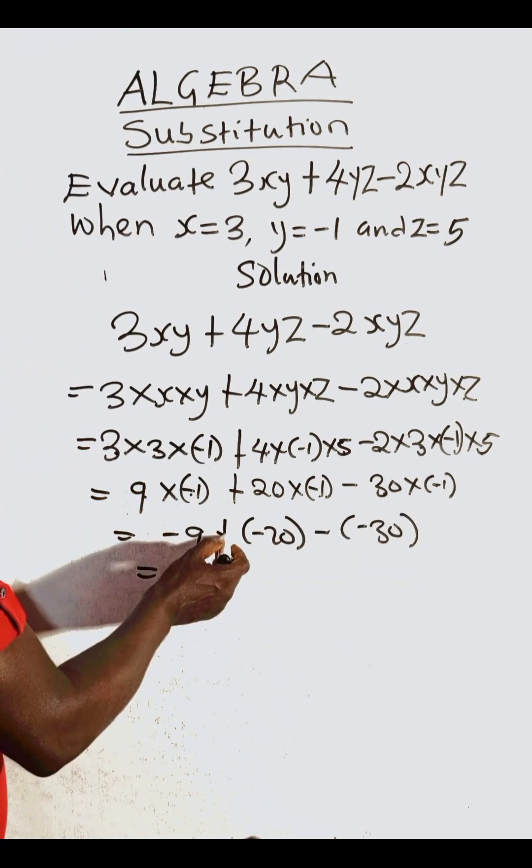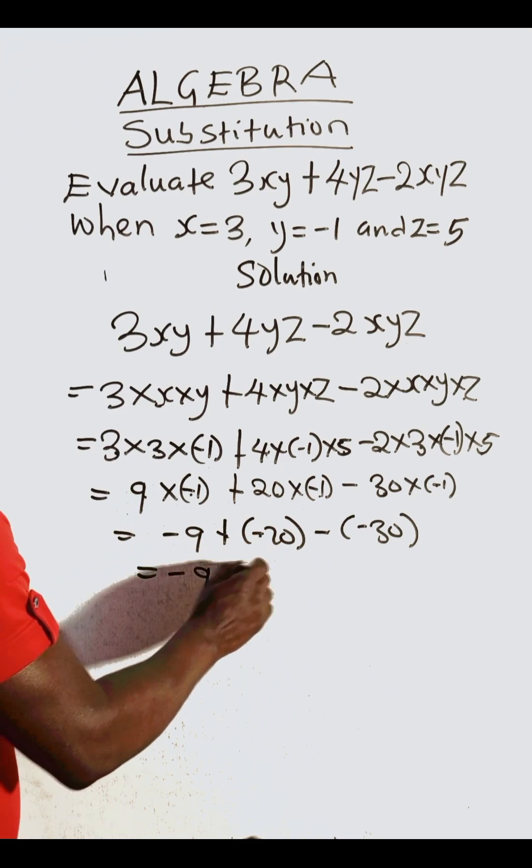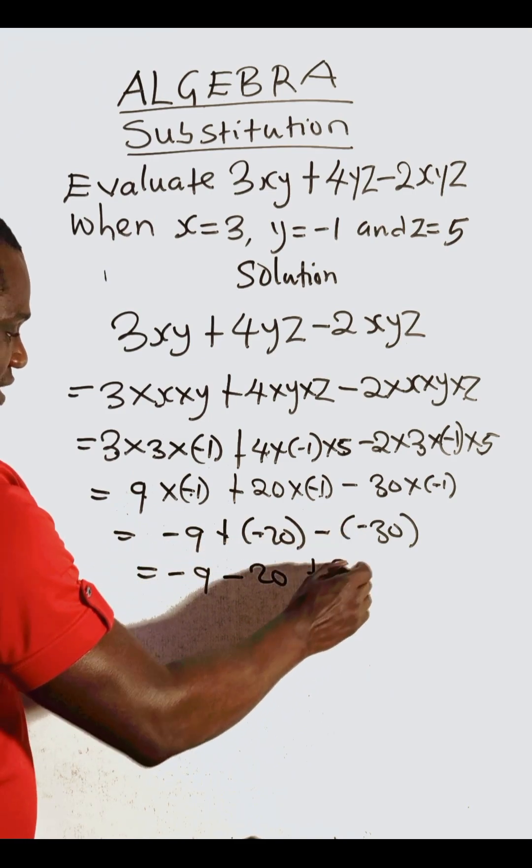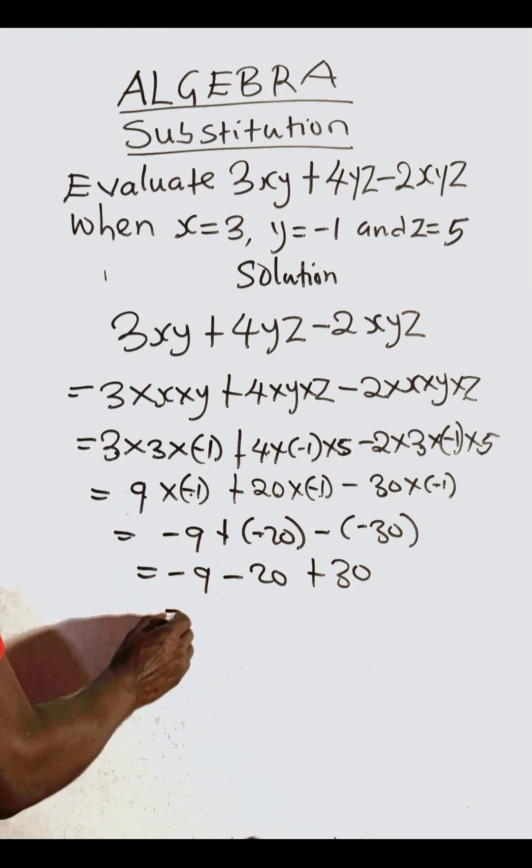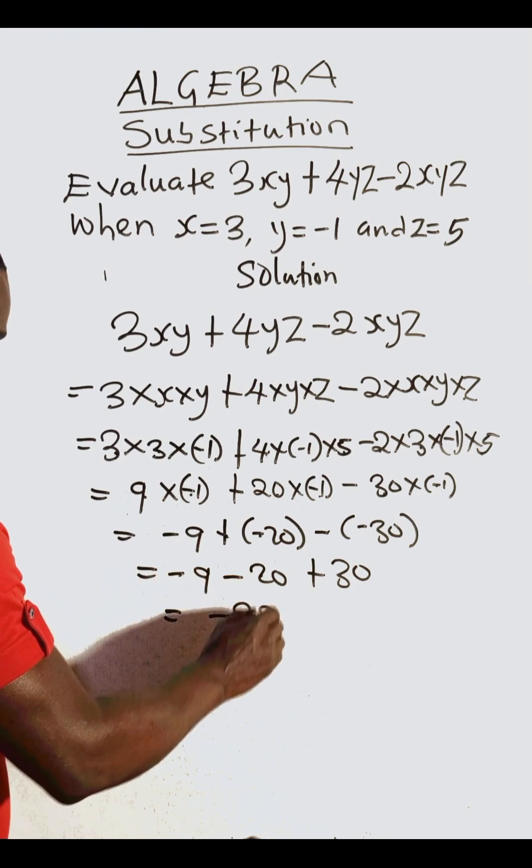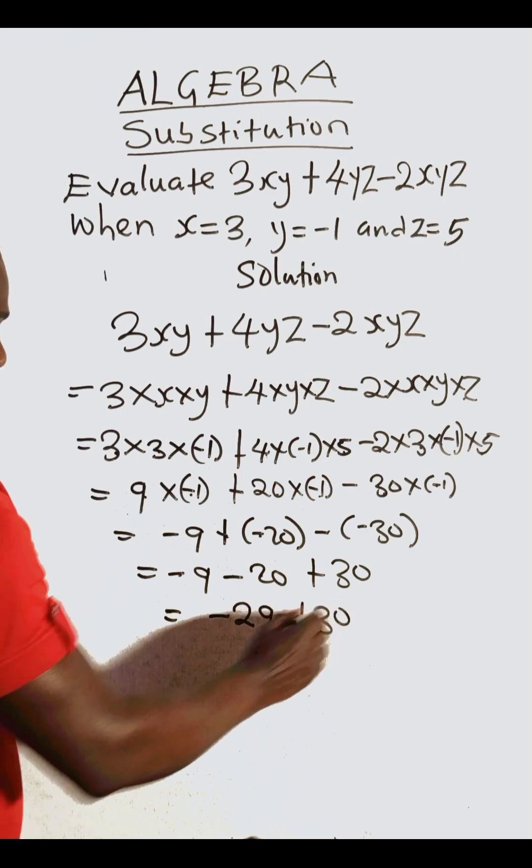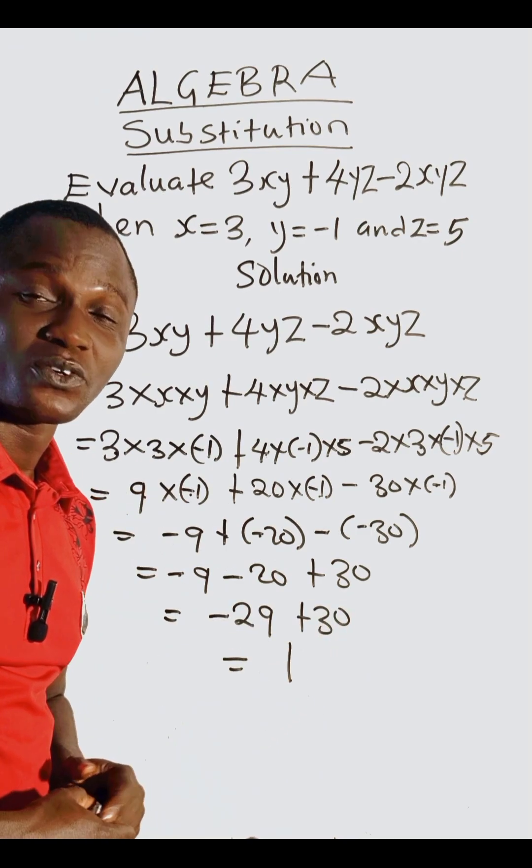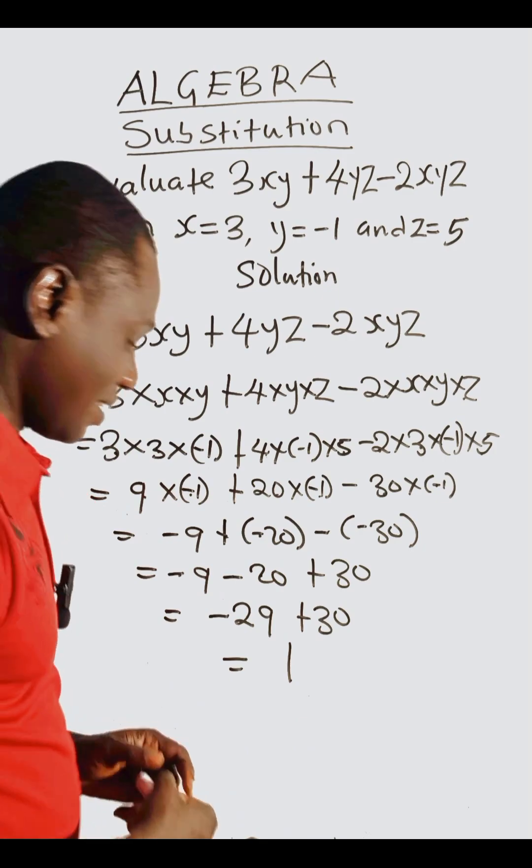We have minus nine here, then plus times minus is minus, minus times minus is plus thirty. Now minus nine minus twenty is minus twenty-nine, then plus thirty. This gives us a positive one. So simple.